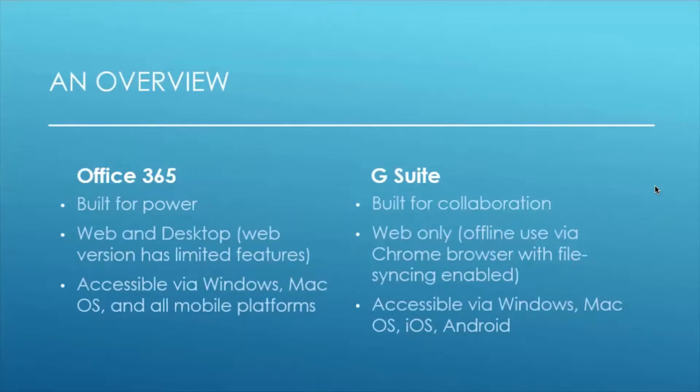Office 365 and G Suite were originally created from completely different backgrounds. Office 365 has been around for a long time — we are all very familiar with Microsoft Word, which has been around nearly since the beginning of personal computing, and it grew into PowerPoint, Excel, and the rest. Whereas G Suite started as Google's search engine, then gave the option to edit collaboratively with various documents and grew that way.